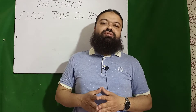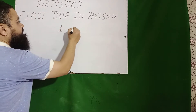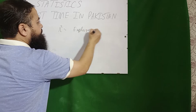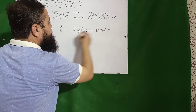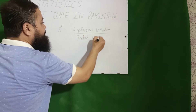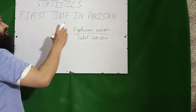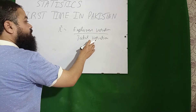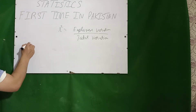Dear students, the formula of R-square is explained variation over total variation. This is a very important one. If in the exam there are four options, the correct option will be: R-square is equal to explained variation over total variation.